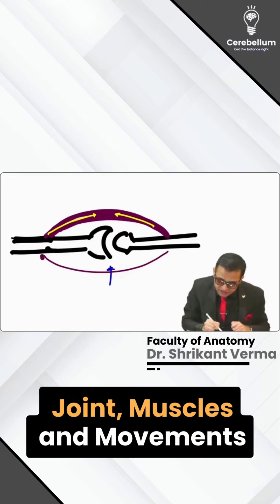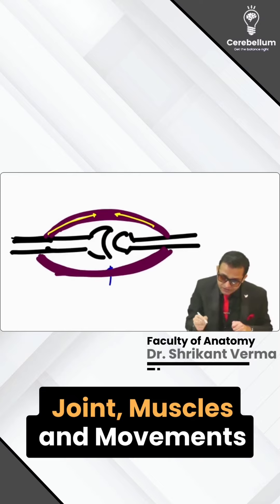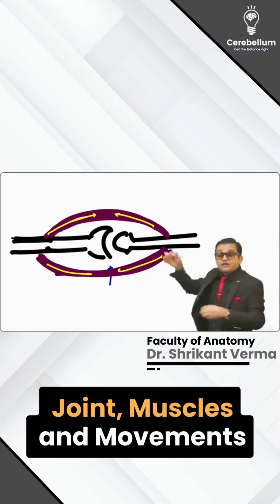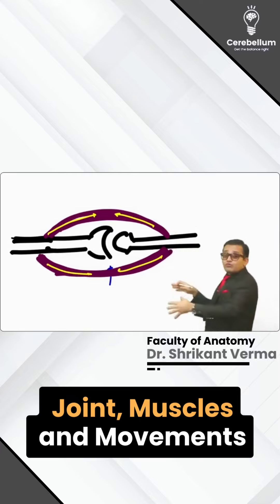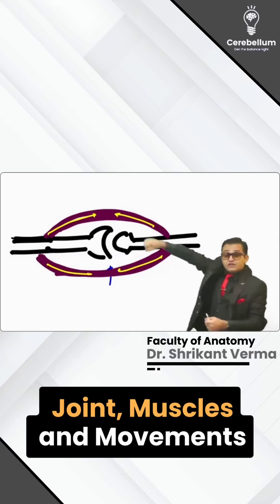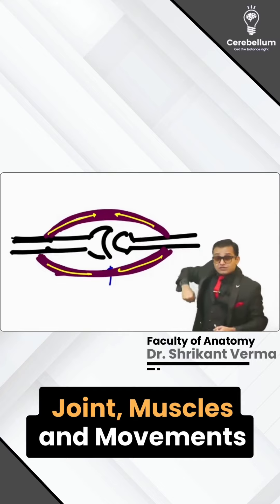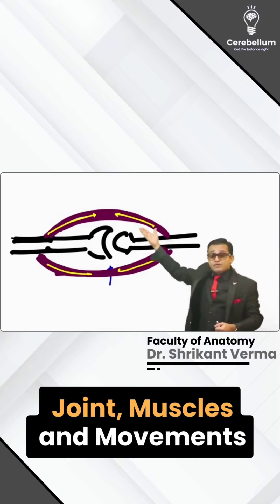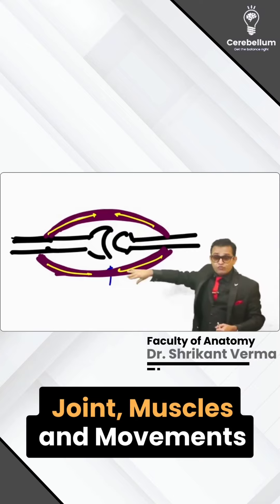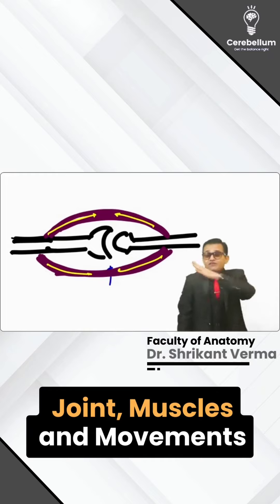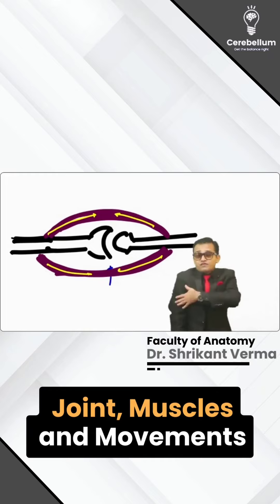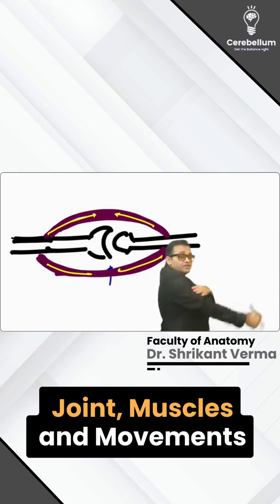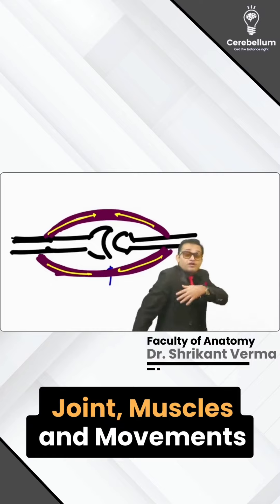If any muscle is located on the downside, when it contracts it will pull the bone downside. So if muscle is above — above movement; muscle is below — below movement. Apply the logic: if muscle is on the front — front movement; if muscle is on the back — back movement.